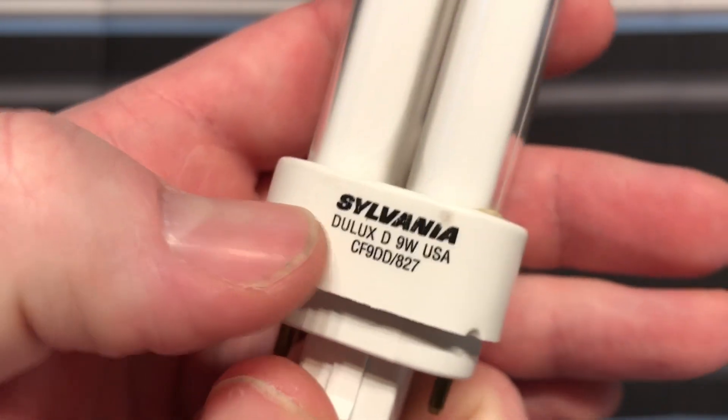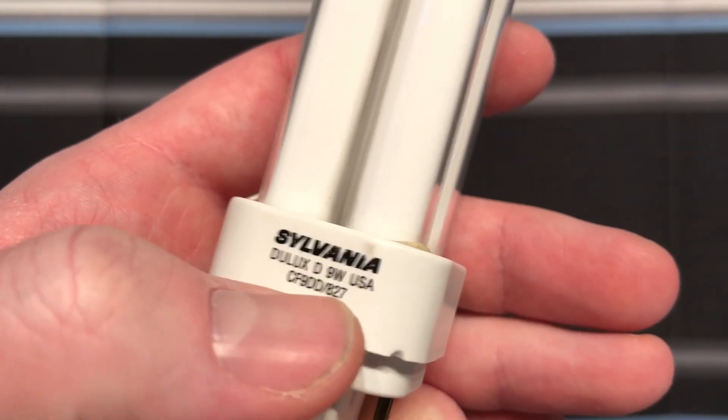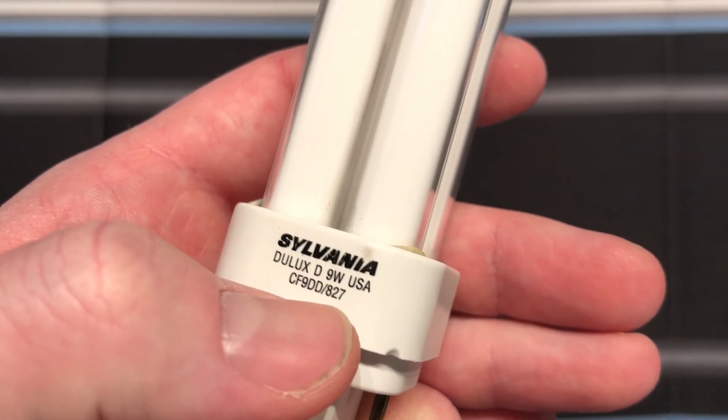Of course we have the Sylvania etch here, Dulux D, 9 watt USA, 27, again for the 2700K.